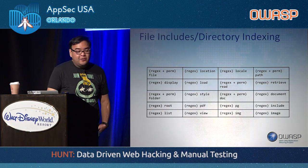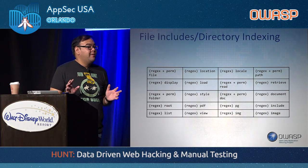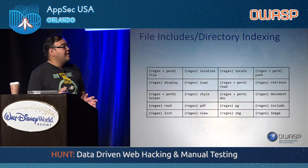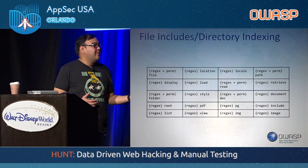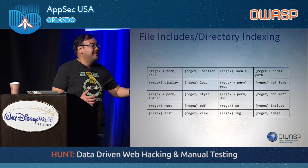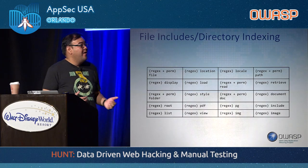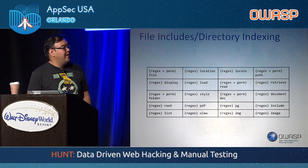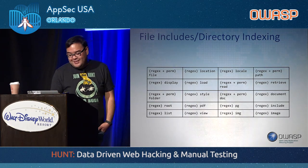Next vulnerability class: file includes, which covers both remote and local file includes as well as directory indexing. A lot of the parameters had to do with both vulnerability classes. You'll see parameters like 'file', 'location', 'locale', 'path' — very simple stuff. These are parameters that a lot of our bug hunters actually did find really juicy vulnerabilities on and got paid out a lot of money for. Once you get all the data together, it's like, 'of course, why didn't I see that before?'